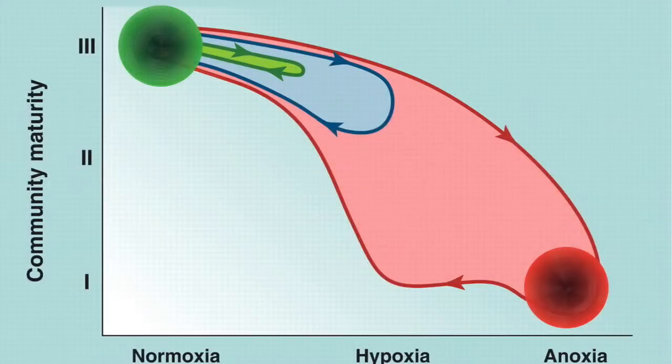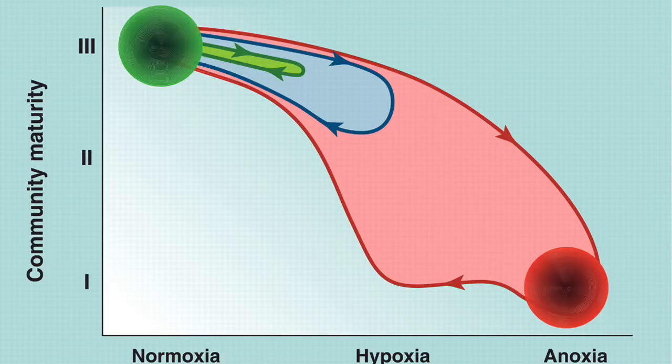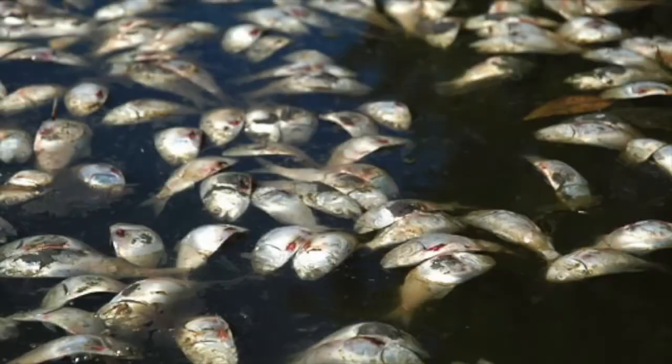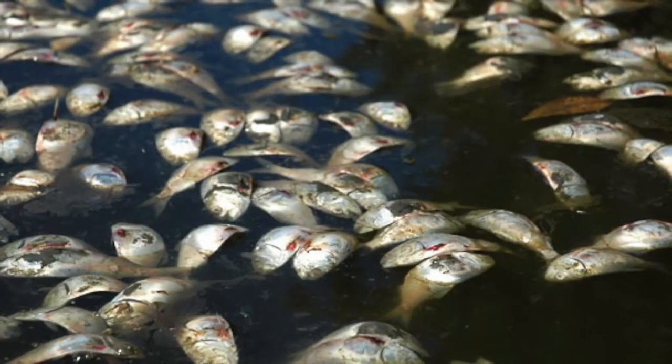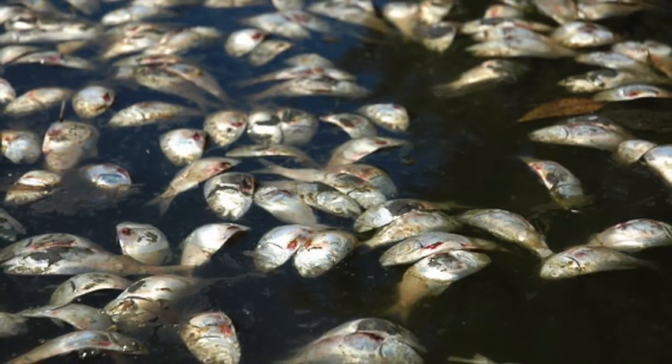bacteria use up dissolved oxygen in the water to digest the decaying algae. The water in these areas is hypoxic, meaning it has dangerously low concentrations of oxygen. The green area shows a healthy level of dissolved oxygen. As the level of oxygen drops, native species die off. The less hypoxic a system is, the quicker it can recover. Without oxygen to breathe, marine life simply suffocates.